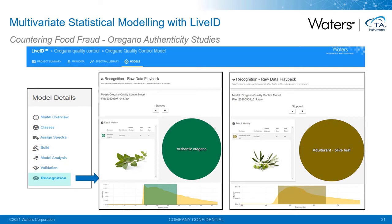Representative samples of four different herb species not represented in the model — marjoram, thyme, cistus, and mint — were also included in the validation study. When we ran those, the model returned an outlier classification, indicating that the chemical profile was not recognized as either matching the oregano or the single-adulterant class olive leaf included in the model within the defined outlier distance.